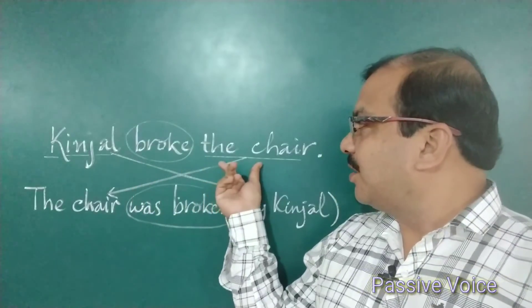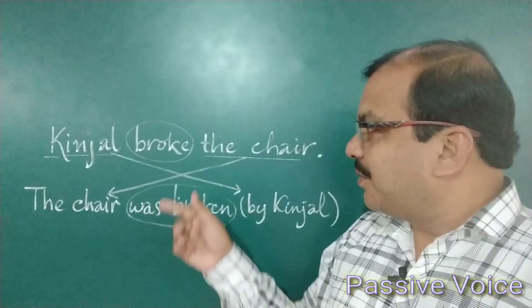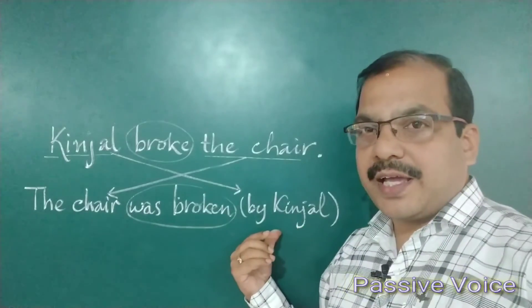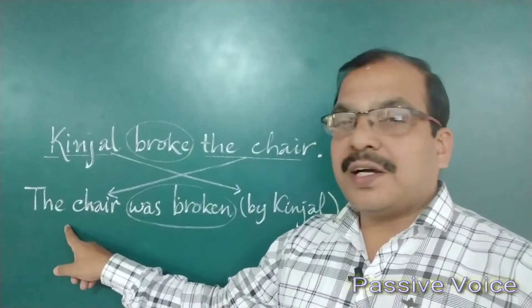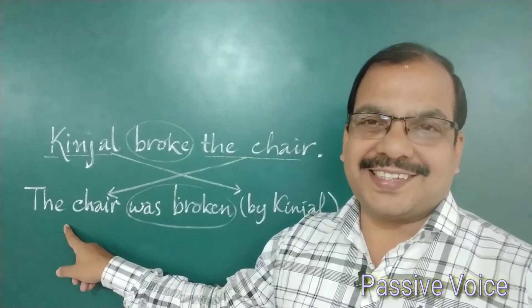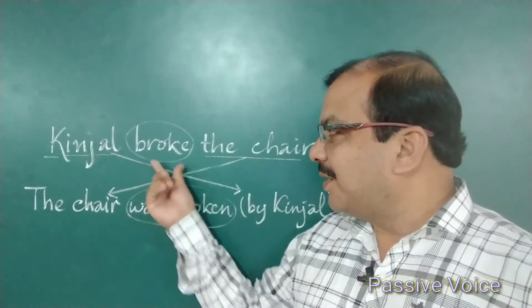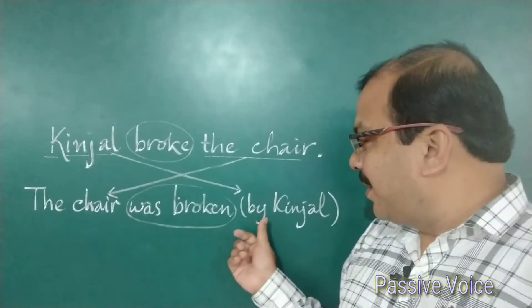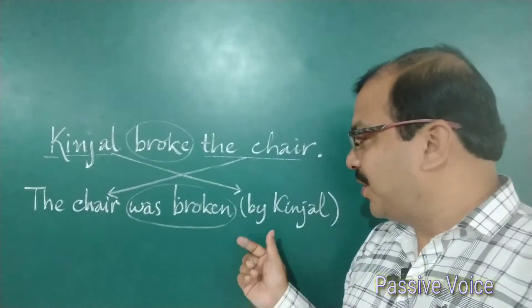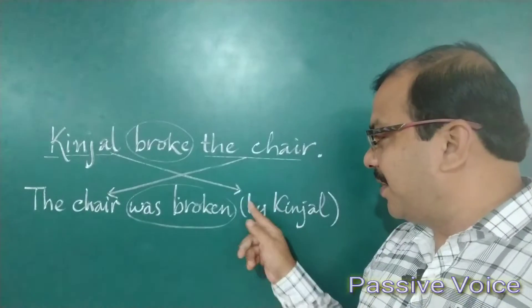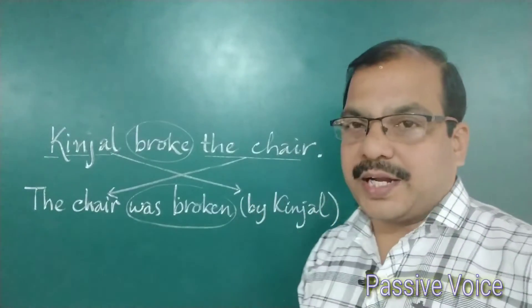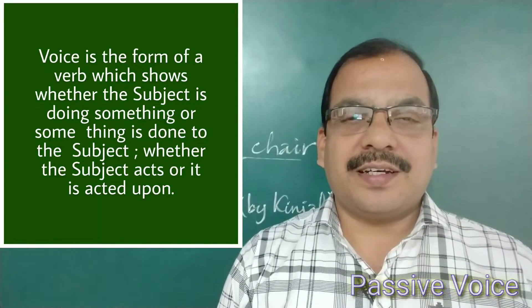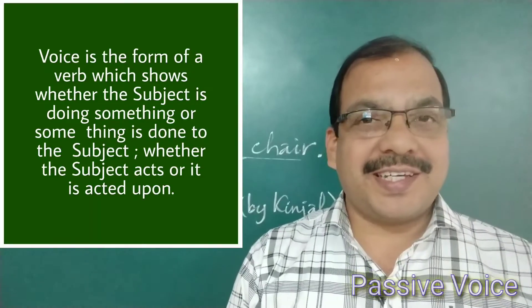'Kinjal broke the chair' — 'the chair was broken by Kinjal.' 'Broke' is a transitive verb; 'the chair' is its object. Notice the position change: Kinjal moves to the end as 'by Kinjal' — the agent — and the object 'the chair' moves to the prime subject position. The verb changes from 'broke' to 'was broken.' Remember, in only about 20% of sentences in English do we use the agent, and even then it is kept in brackets.